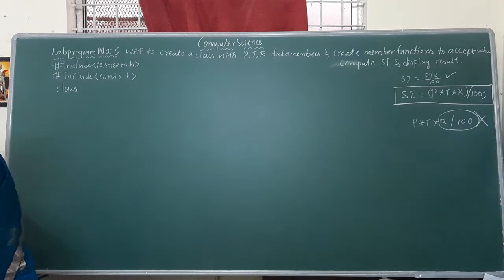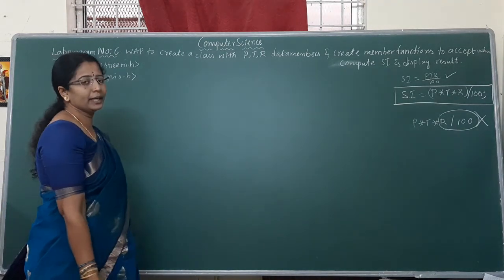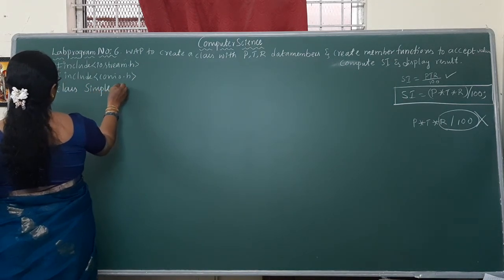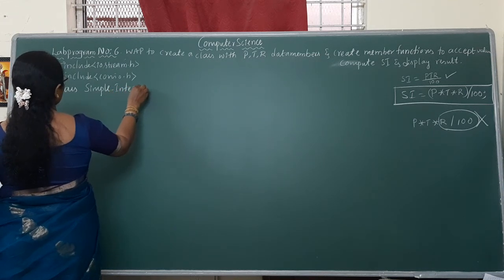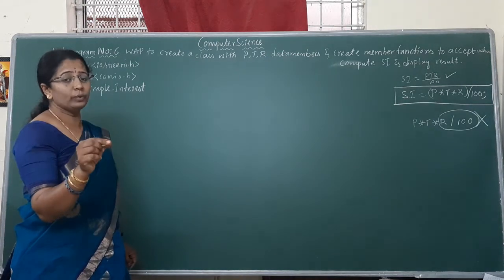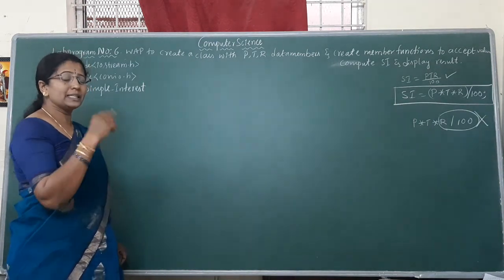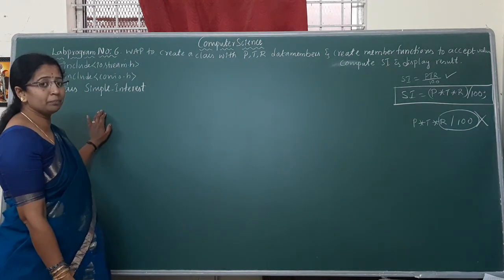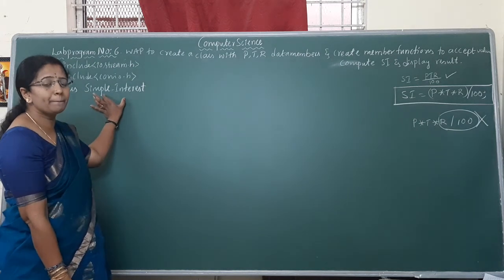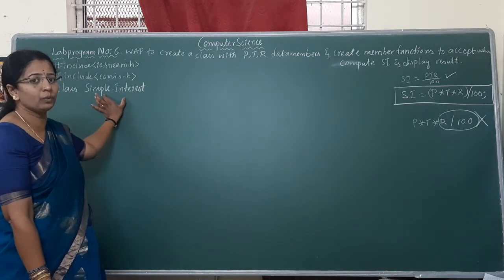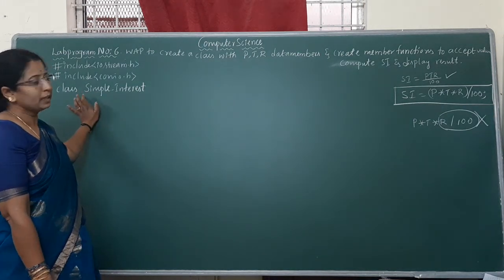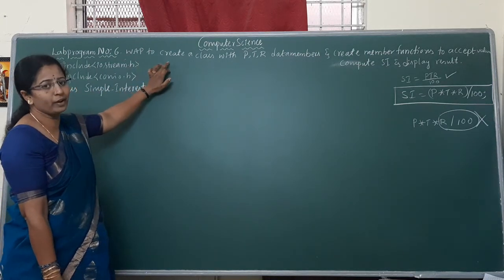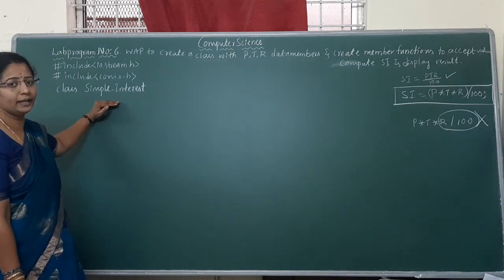First, class declaration — class definition. Here we are finding simple interest, so I am taking the class name as 'simple_interest'. The class name always depends on the program. In yesterday's class we wrote student details, hence the class name was 'student'. Here we are finding simple interest, hence the class name is 'simple_interest'. It is a meaningful identifier given to the class definition, and it helps you identify which program you are writing.